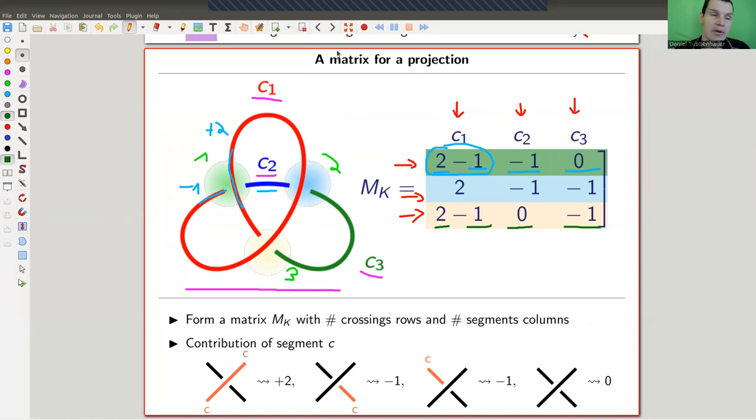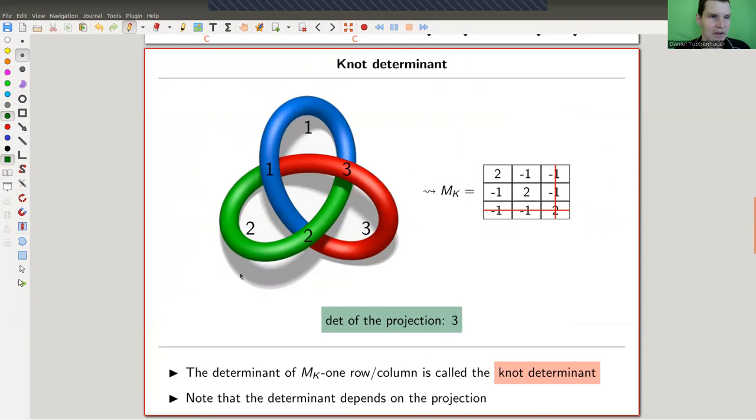So you can associate this matrix MK to every knot in a very straightforward fashion. Just, so what you very often do in this setup, is you color segments, and you color crossings, and put everything together in some kind of matrix type fashion. And that's exactly what's happening here. Okay, and then, so here's another example.